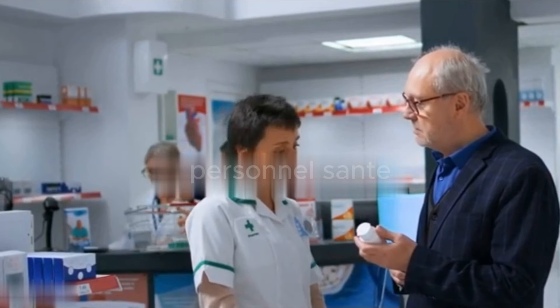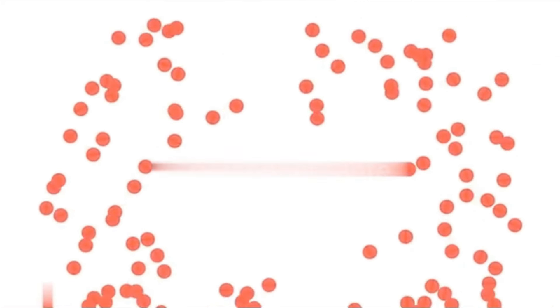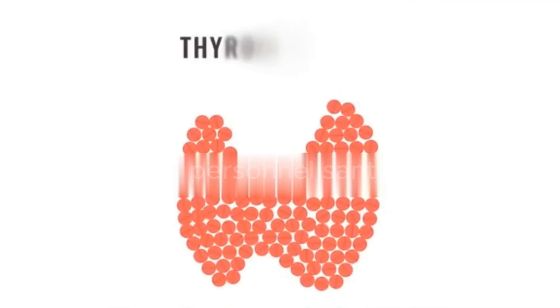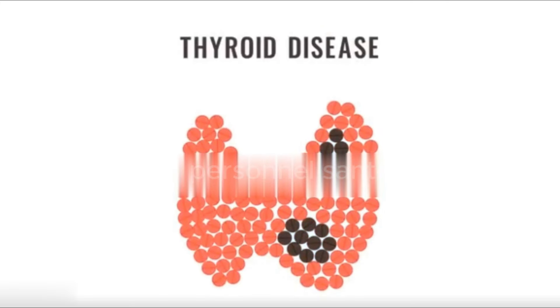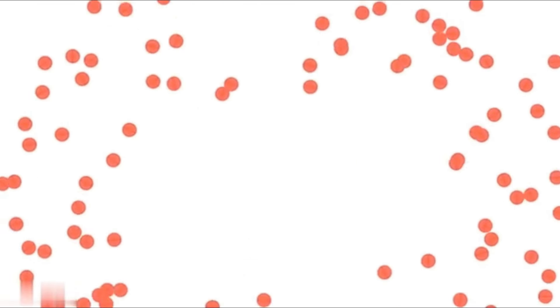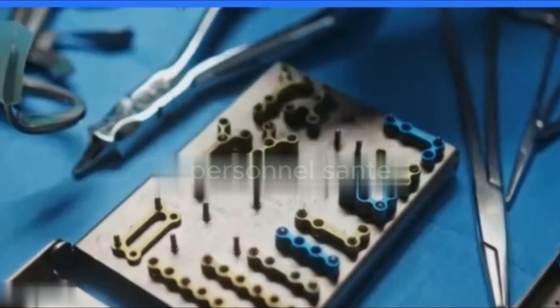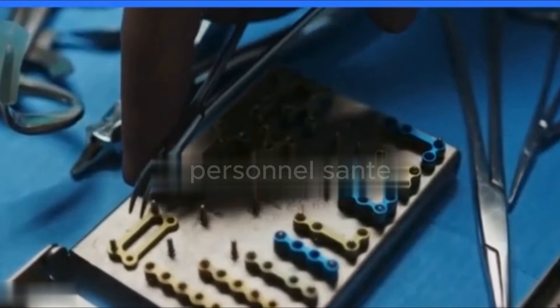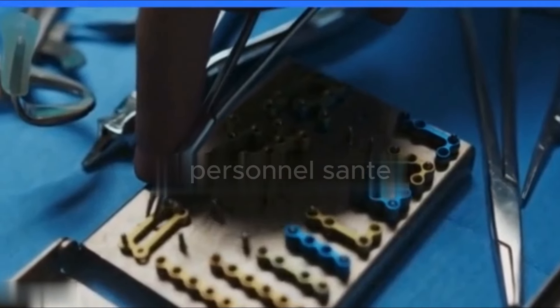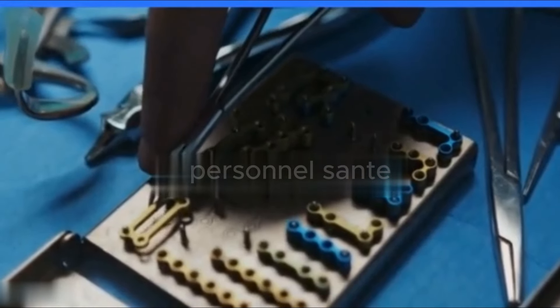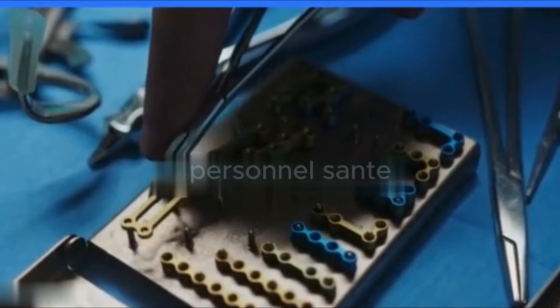It is important to note that antithyroid drugs can successfully treat more than 50% of Graves' disease cases. Other treatments, such as radioactive iodine I-131, may be prescribed for toxic adenomas, toxic multinodular goiters, or thyroid cancer. In some cases, surgery may be necessary, in the form of either a partial or total thyroidectomy, depending on whether part or all of the thyroid gland needs to be removed.